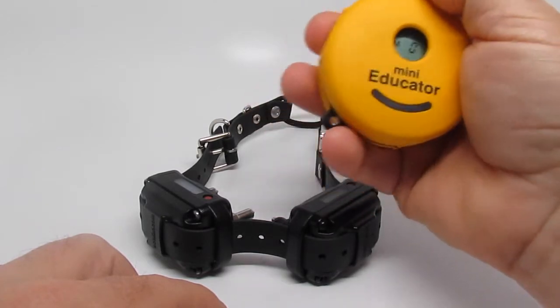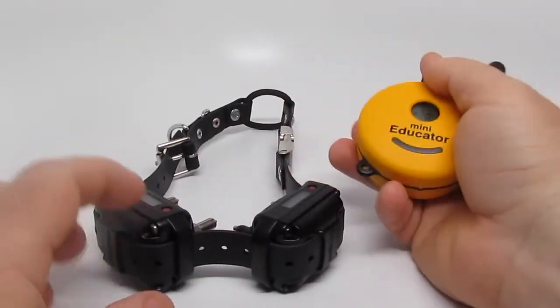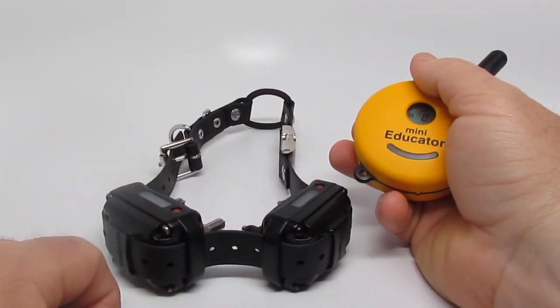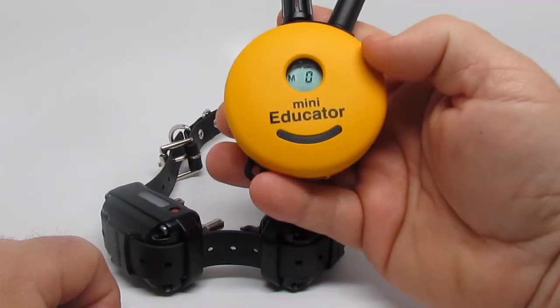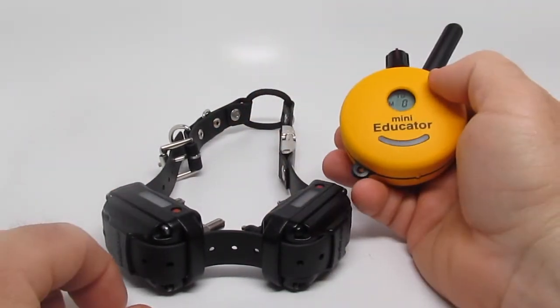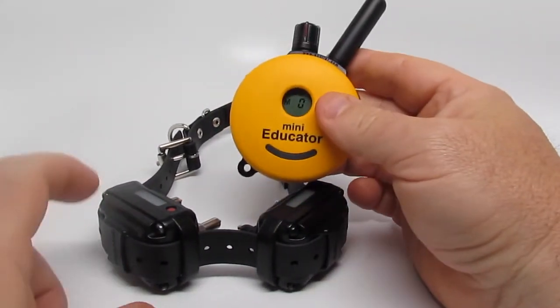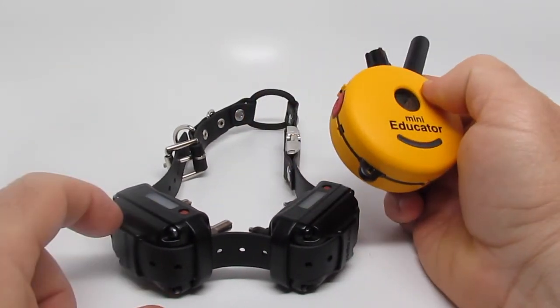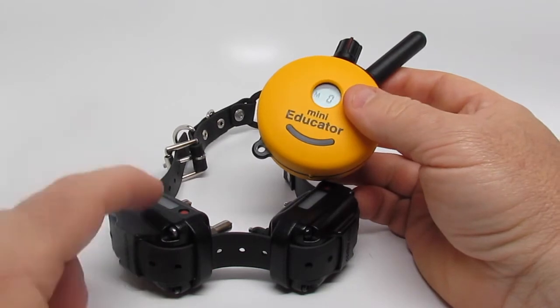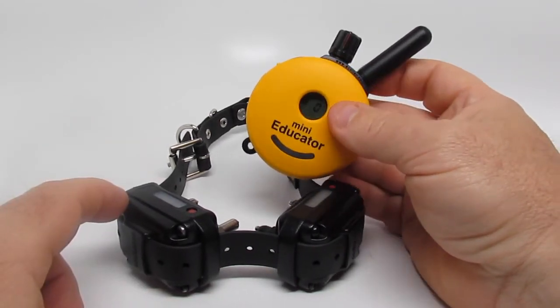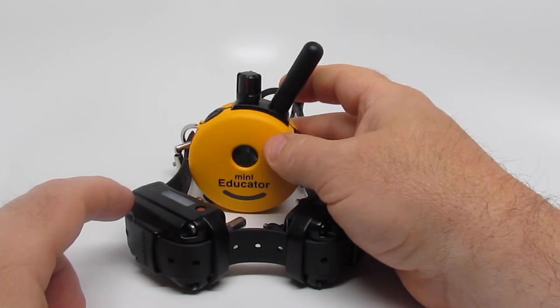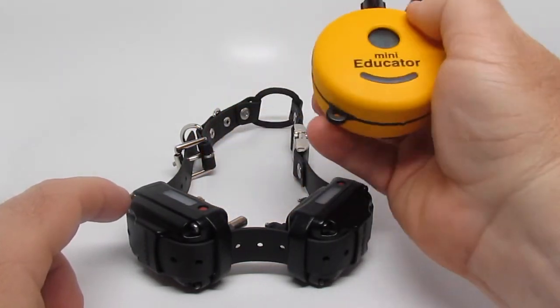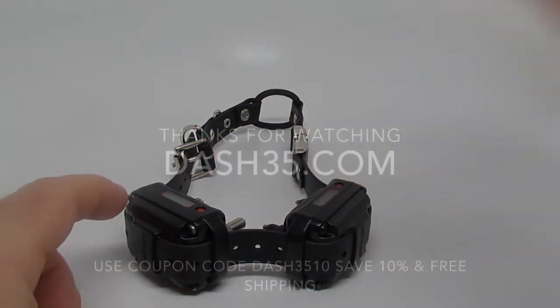So, there you have it. The Mini Educator. How to add an extra receiver collar. How to make a plus out of it. From dash35.com. Please visit us. We offer special discounts on all e-collar technology, remote trainers, accessories. Anything you need, we'll have it. We want to be your one-stop shop. My name is Kevin. And you have a wonderful day.